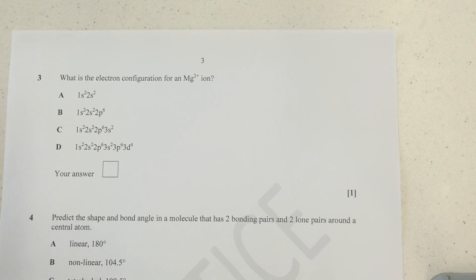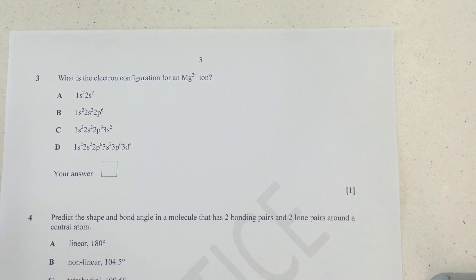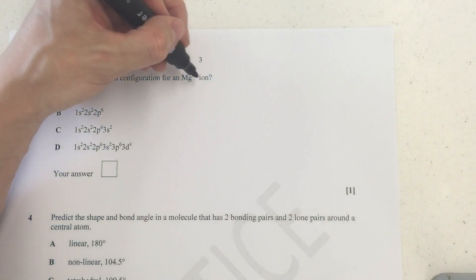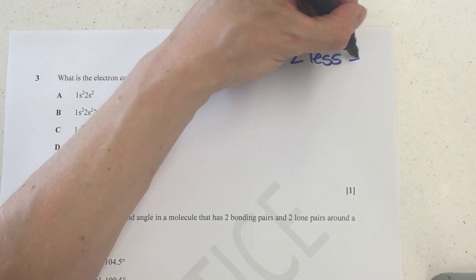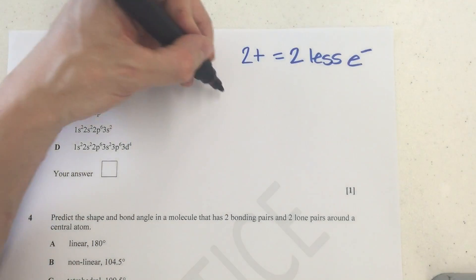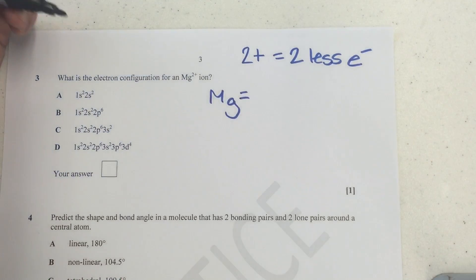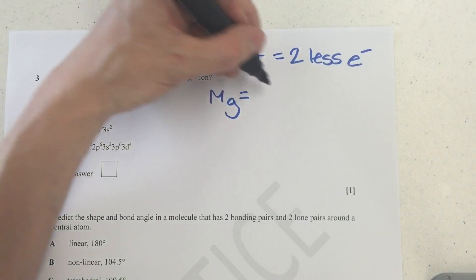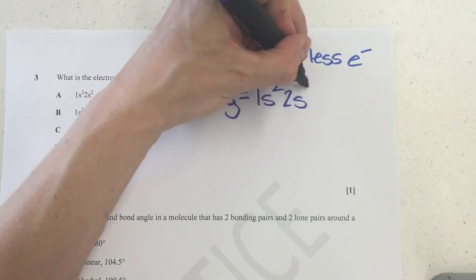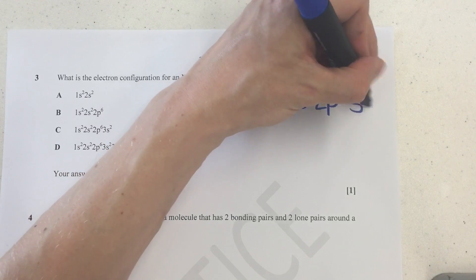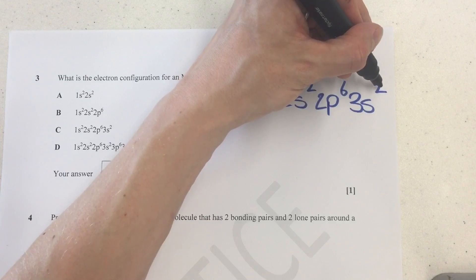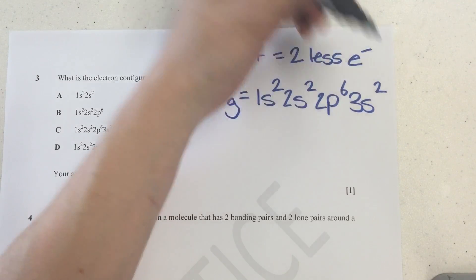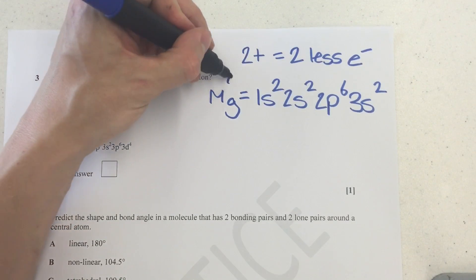Next question. Our next question here is looking at electron configuration of a magnesium 2+ ion. Now, remember, if it's got a 2+ charge, that means it's got two less electrons than normal. Now, normal magnesium, its electron configuration or electronic configuration - you can actually say either one, it doesn't matter - normally it would be 1s2, 2s2, 2p6, 3s2. We can double check this because it's in the third period of the S block and it's in the second column of the S block. So that's how we can double check that.